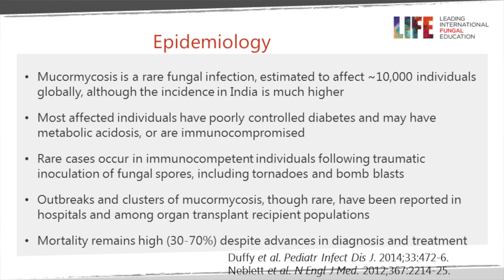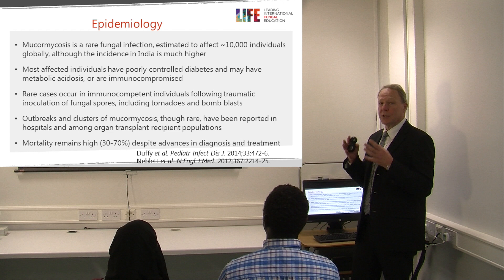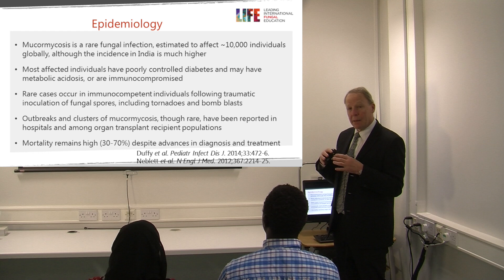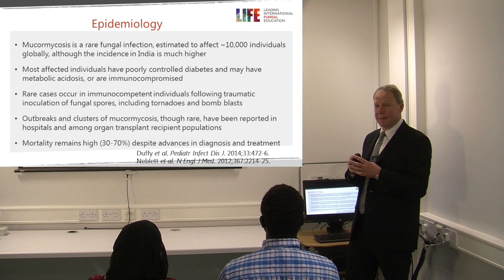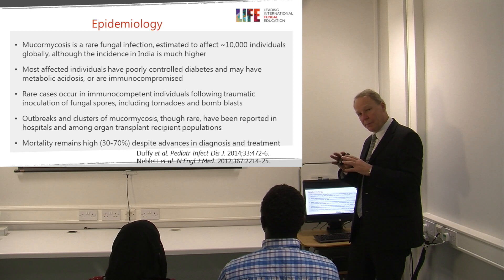Poorly controlled diabetes and acidosis are important underlying factors, but also neutropenia and some transplant patients are at risk. We also get infection in immunocompetent individuals following trauma, such as after a tornado, tsunami, or military bomb blasts and IEDs. There are also outbreaks related to hospital events - for example, burns patients with contaminated bandages, wooden tongue depressors, or inadequate air filtration for very immunocompromised patients.